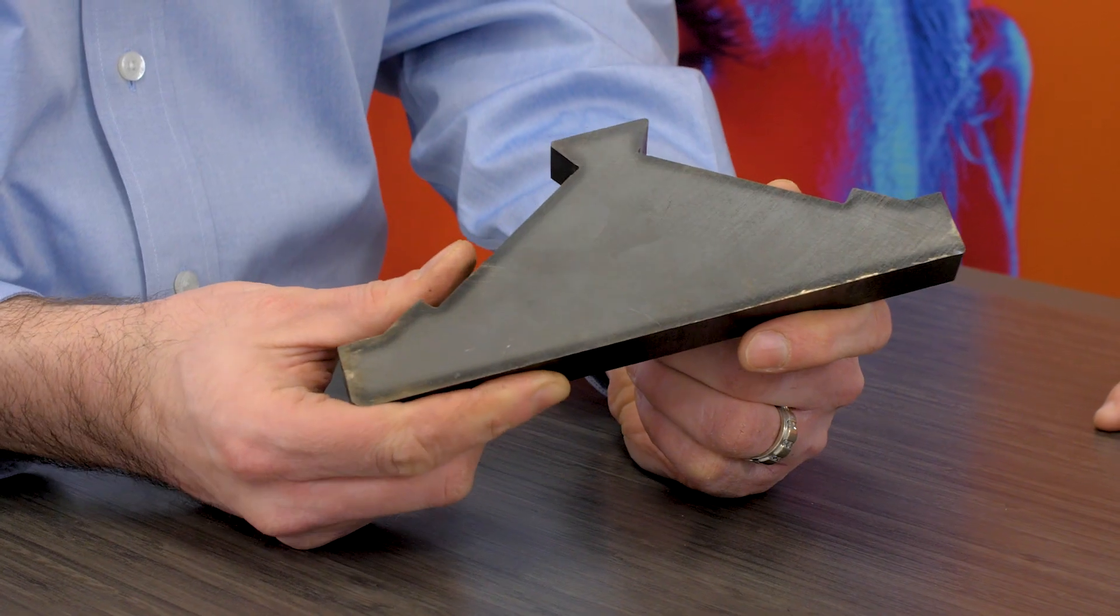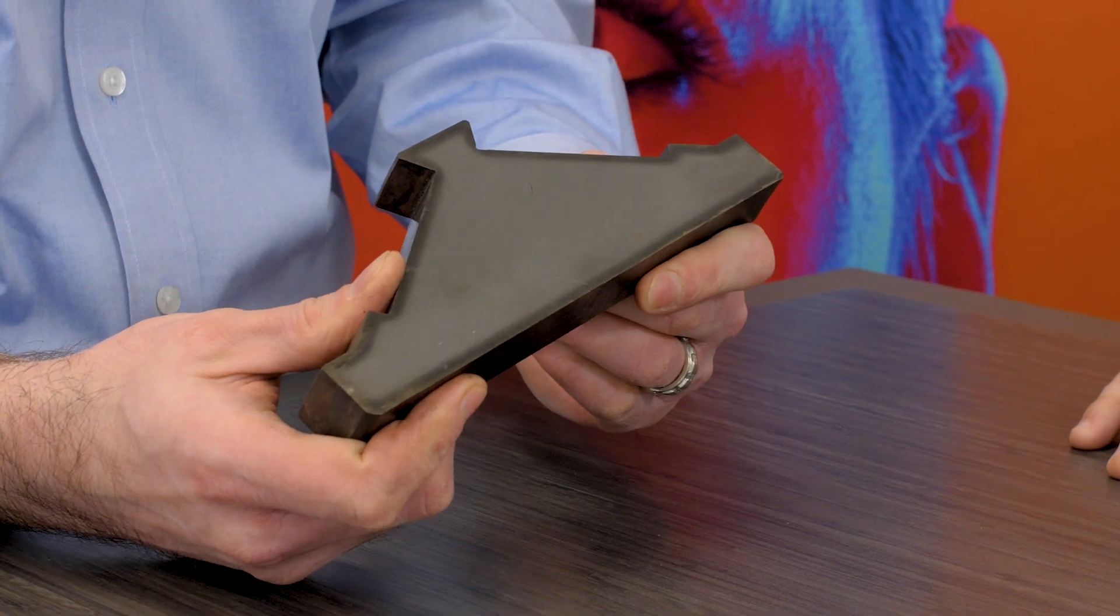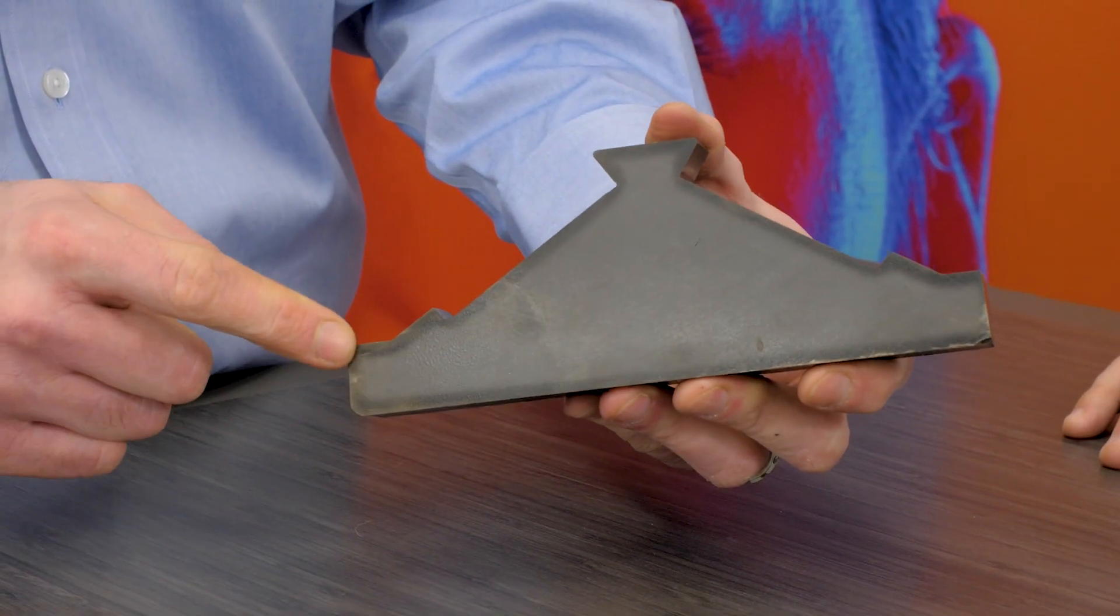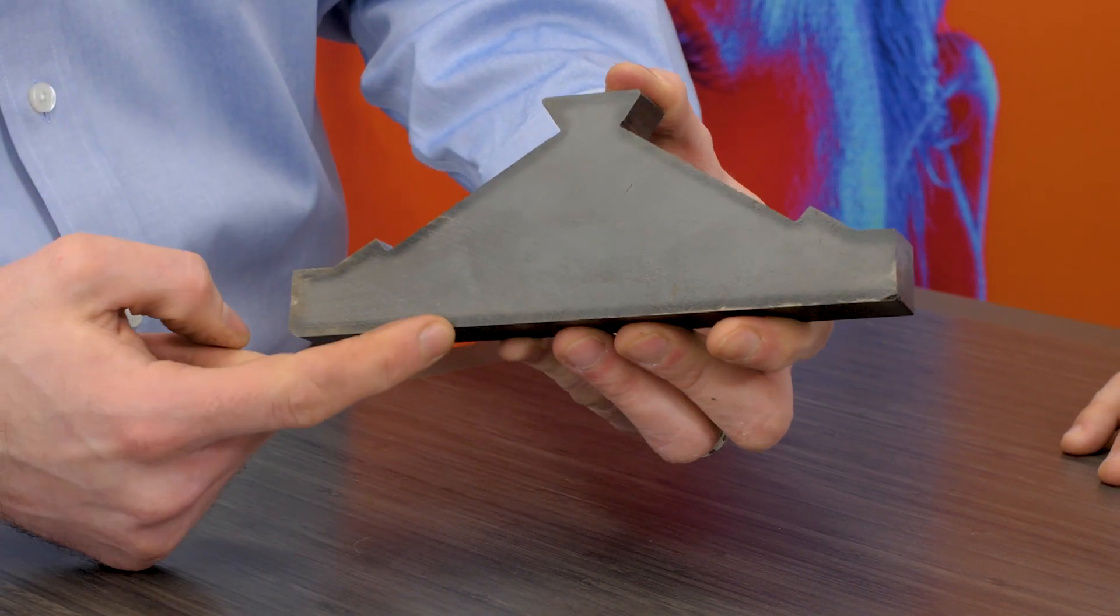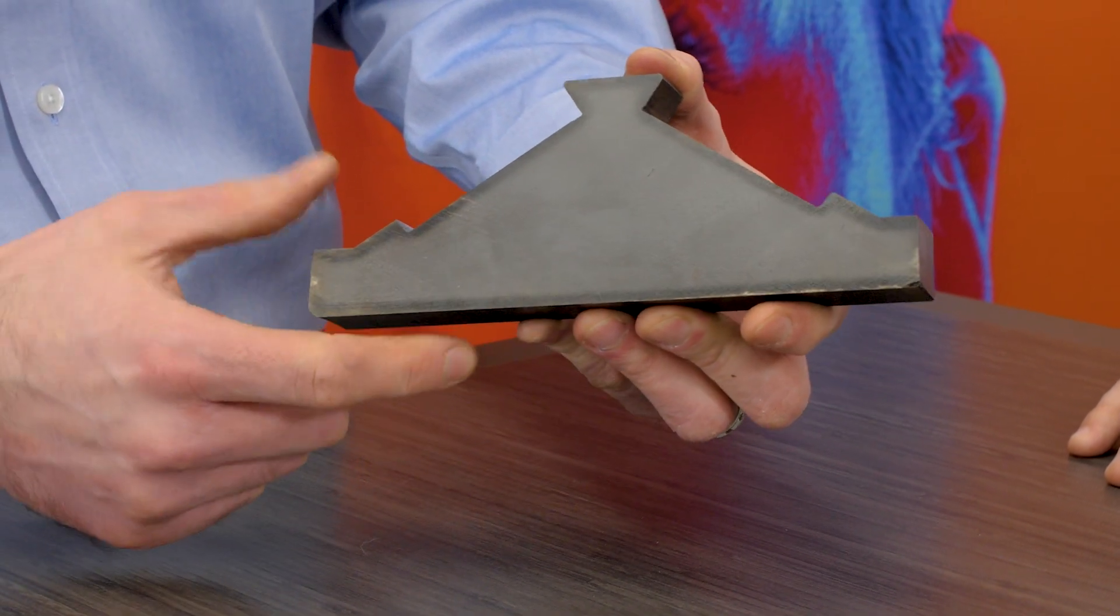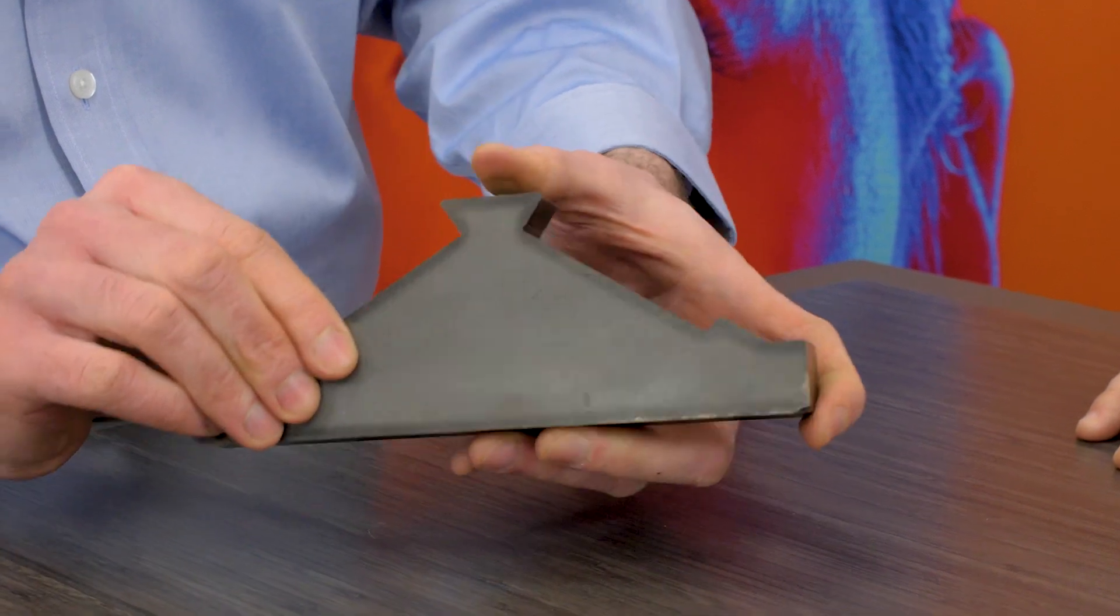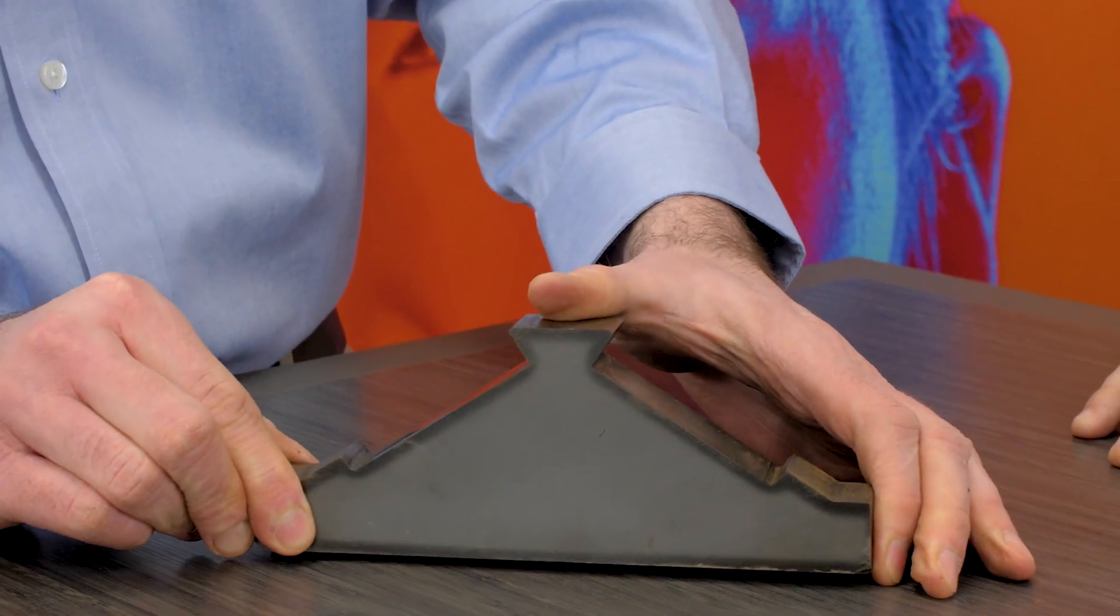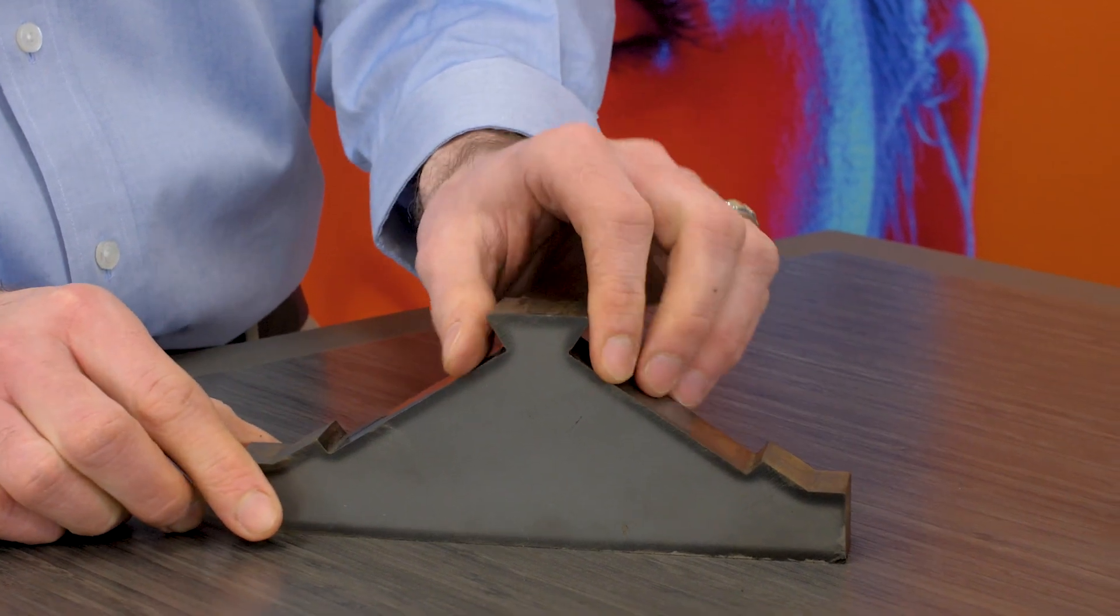Well, in relation to bearings, bearings that have case carburization, this is a through section of an inner race. As you can see here, the dark spots around the outside, those are hardness spots, and basically this allows it to have a wear surface, but keep a ductile base material on the inside, so it'll handle shock really well.